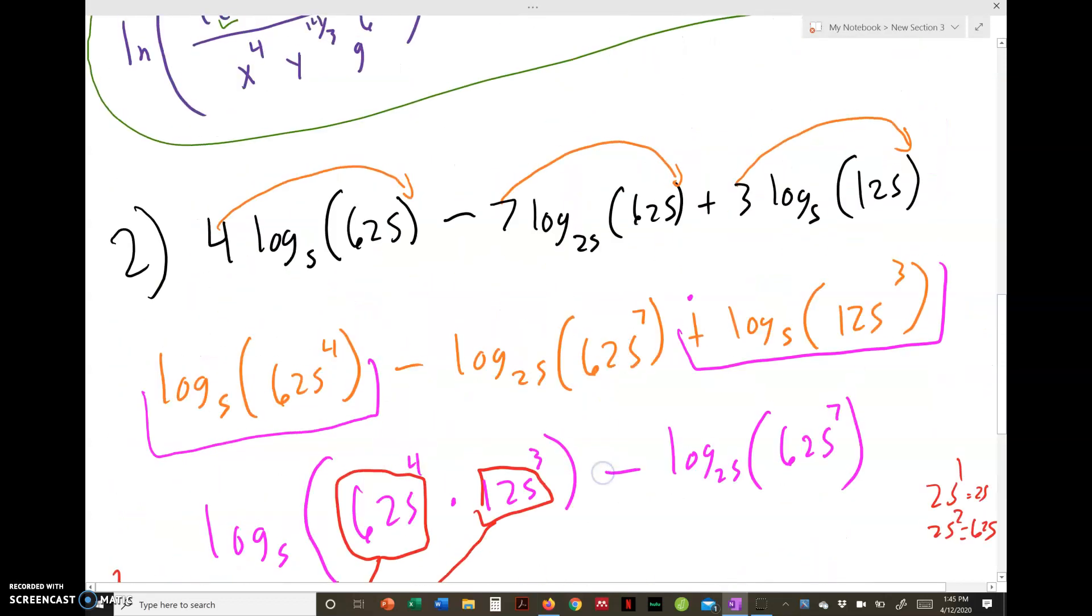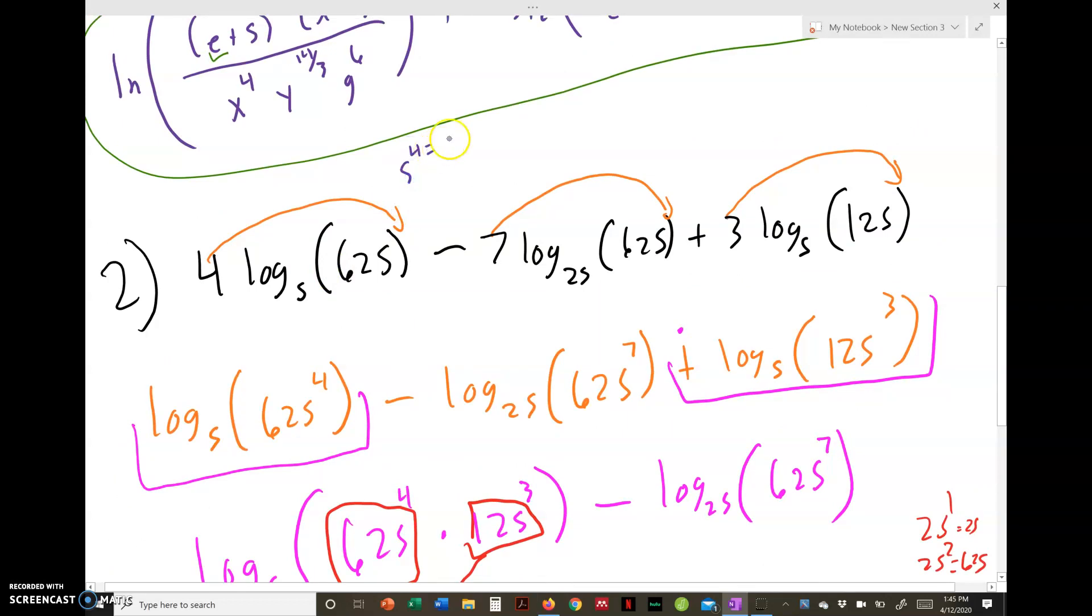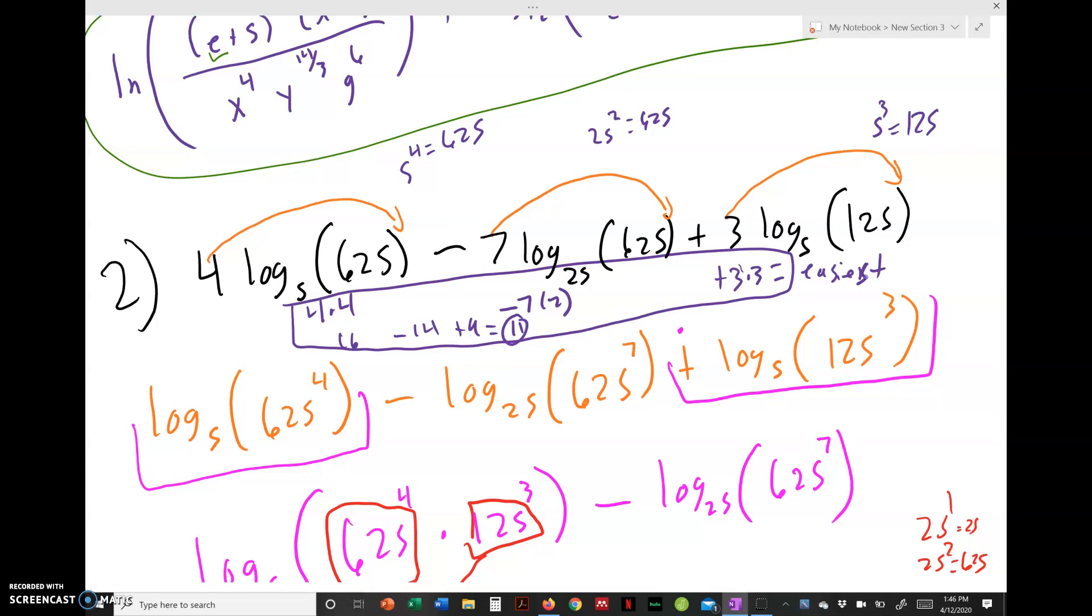And you could have done this from the very beginning by simplifying. Because we could say, okay, 5^4 is 625, so this would become 4 times 4. Here 25^2 is 625, so this would be minus 7 times 2. And then over here 5^3 is 125, so plus 3 times 3. Well 4 times 4 is 16 minus 14 plus 9 equals 11. And so what this shows is there are two ways to do this. My personal opinion of the easiest is right here. Doing this part right here is the easier approach. This is the easiest. Will you always have it like this? No. As we talked in some of the other examples, you may have the insides like instead of having log base 5 of 125, you may have log base 5...